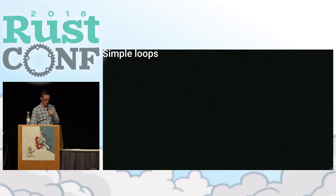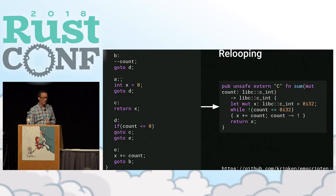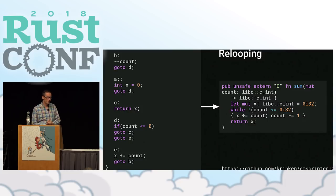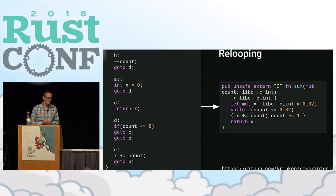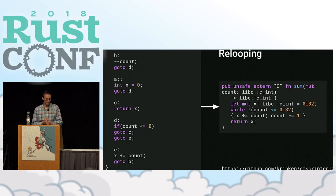In the simple case where the C code doesn't have any unstructured control flow, we simply generate Rust while loops — no matter whether you put in a for loop or a while loop on the C side. In case you have gotos, things get a lot more interesting. We have a demo website where somebody actually submitted a code example, and it reloops quite nicely to a while loop in Rust. I'm calling it relooping because we're using the relooper algorithm by Alon Sakai of the Emscripten project.